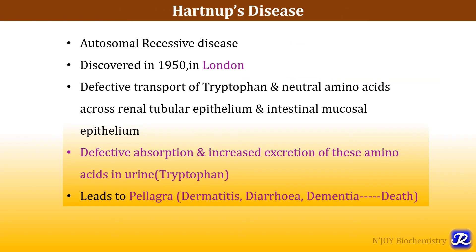The second abnormality associated with tryptophan metabolism is Hartnup disease. It is an autosomal recessive disease first discovered in 1950 in London. There is defective transport of tryptophan and other neutral amino acids across the renal tubular epithelium as well as intestinal mucosal epithelium, causing excretion of these neutral amino acids in the urine. Tryptophan is excreted in the urine, leading to tryptophan deficiency, which further leads to pellagra. The patient presents with symptoms of pellagra: dermatitis, diarrhea, dementia, and eventually death — the four D's of pellagra.